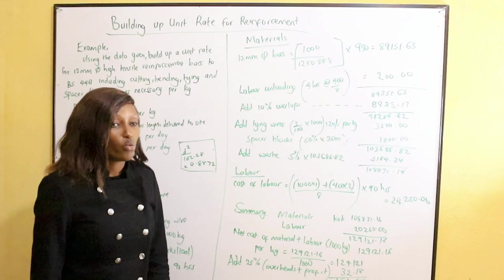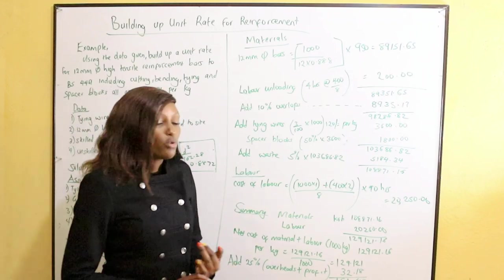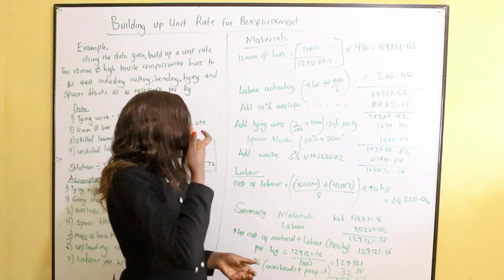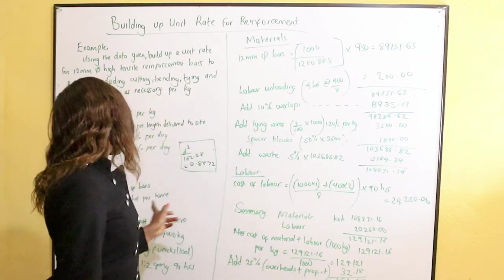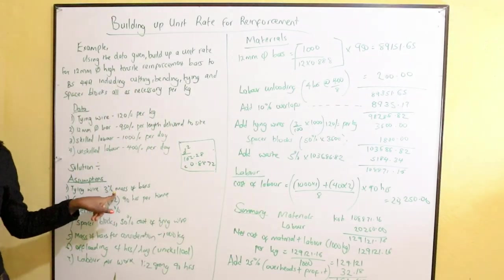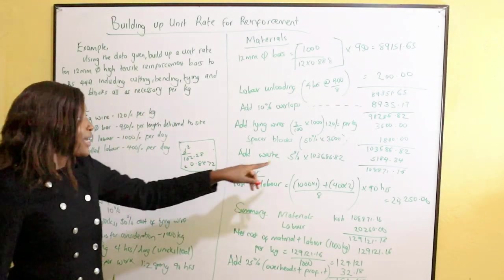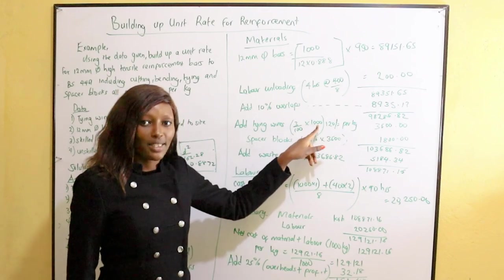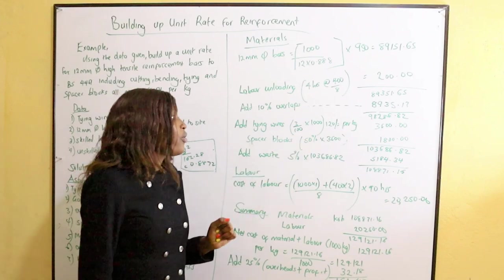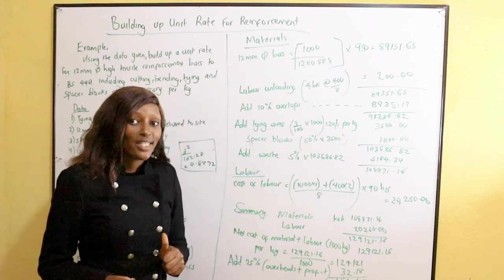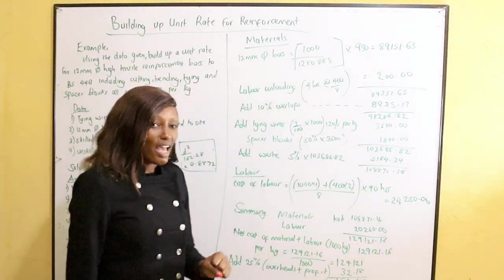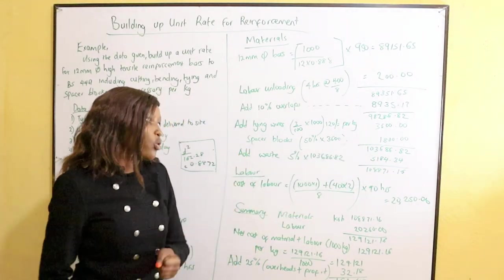Next, tying wire: the assumption is that it is 3% of the mass of bars. 3% of 1,000 kg = 30 kg of tying wire. Multiply by the cost per kg of 120 shillings, giving 3,600 shillings for tying wire.